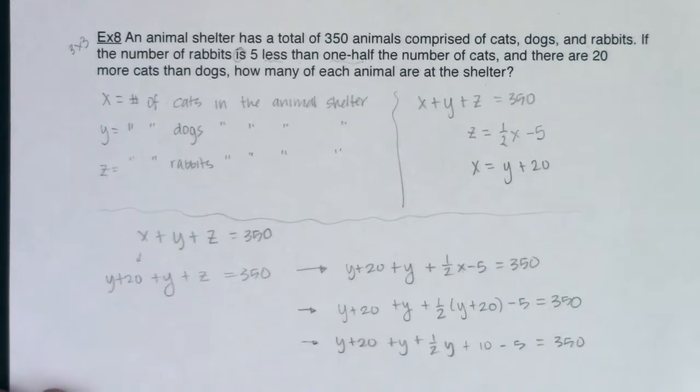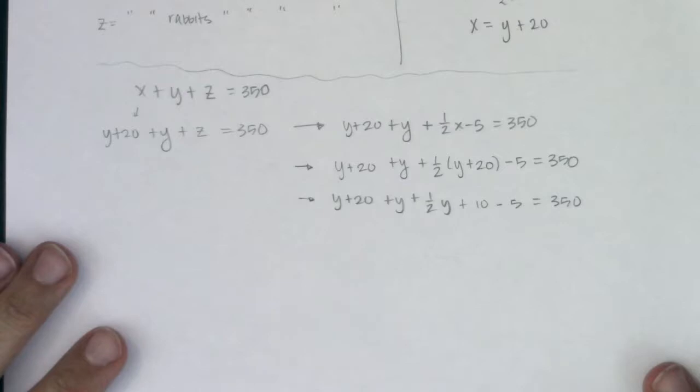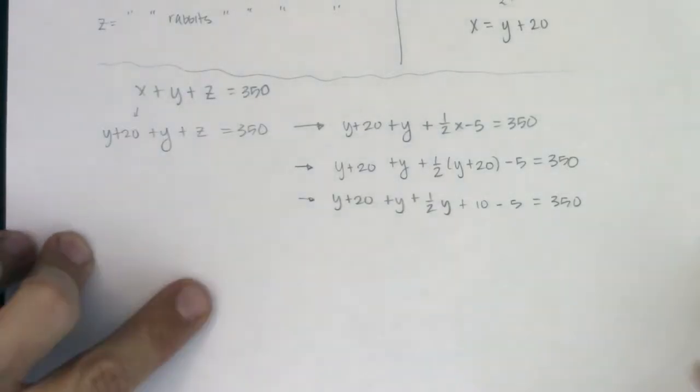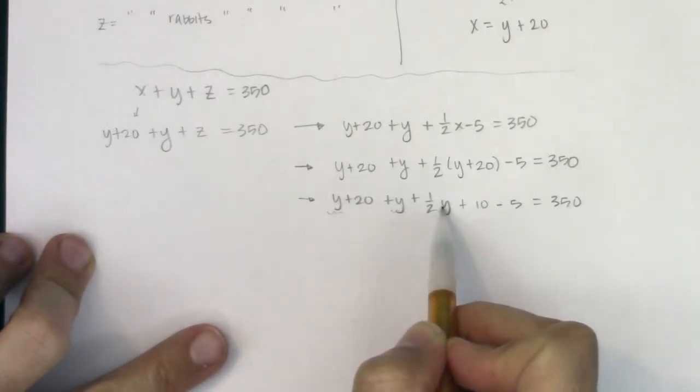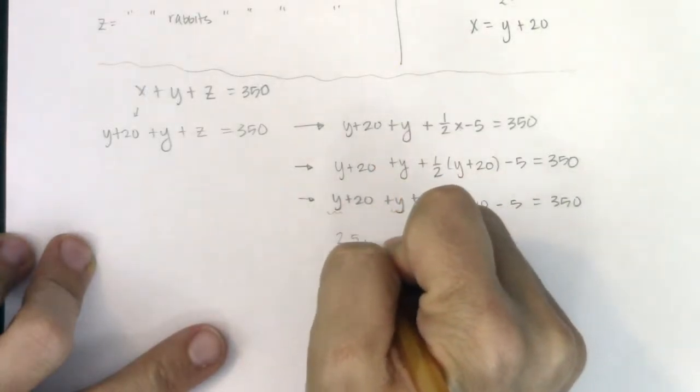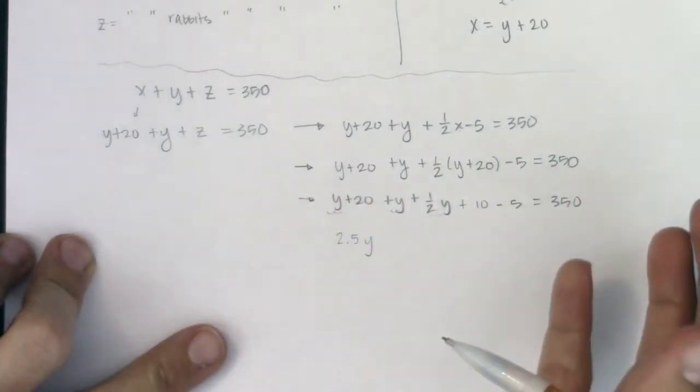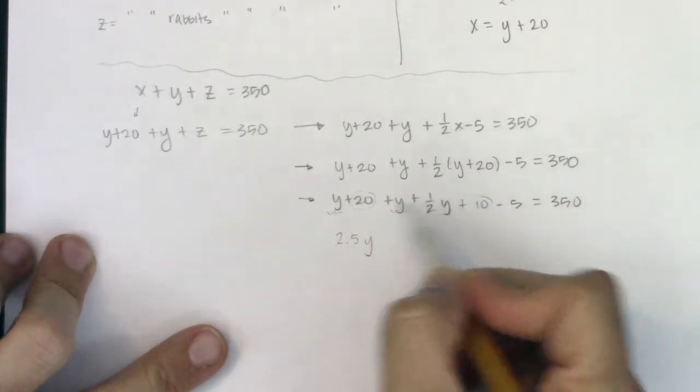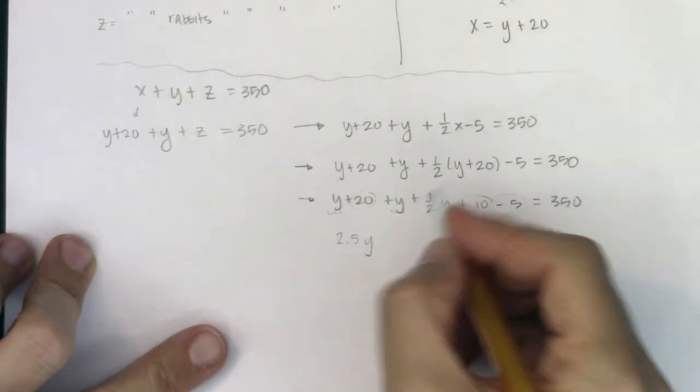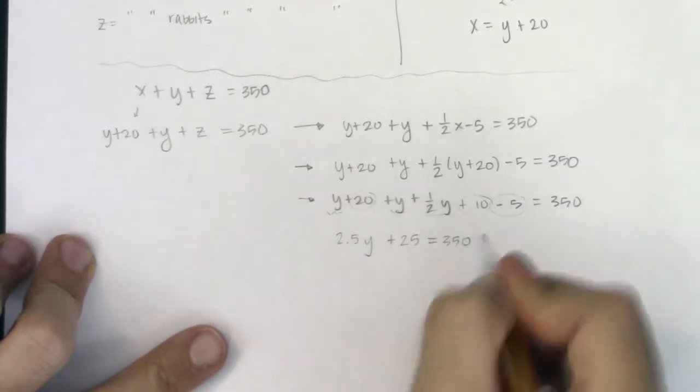Before I run out of room, let me scooch this up a little bit. In terms of like terms, I have a y, a y, and a one-half y, so that looks like two and a half y. You can write 2.5y or five-halves times y, it's up to you. I have 20 plus 10 is 30, 30 minus 5 is 25. So I have 2.5y plus 25 equals 350.